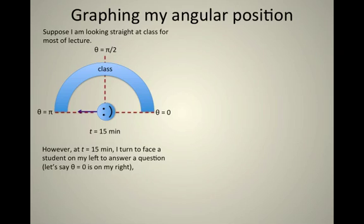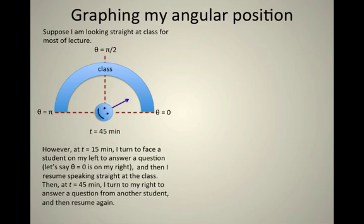If I say that my angular position was initially π/2 because I'm facing straight ahead, but I'm going to change my direction of motion over to π, which is on my left, then let's say I turn back to face the rest of the class and continue my lecture. I turn my head back to θ = π/2, and let's say about 45 minutes into the lecture I turn to this student on my right to answer another question, that on my right being θ = 0.